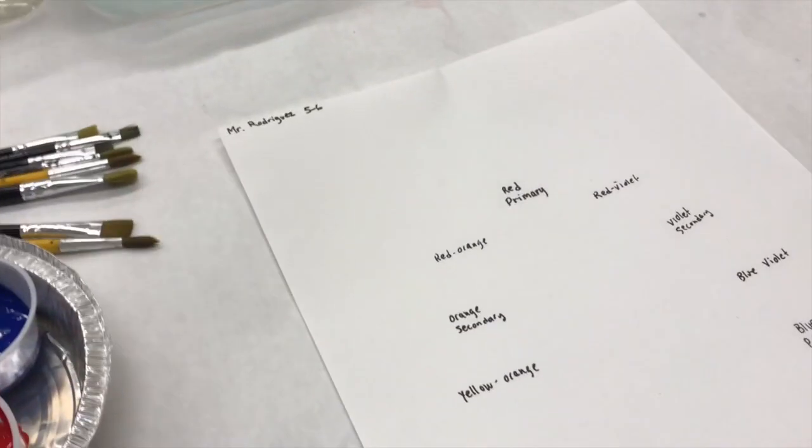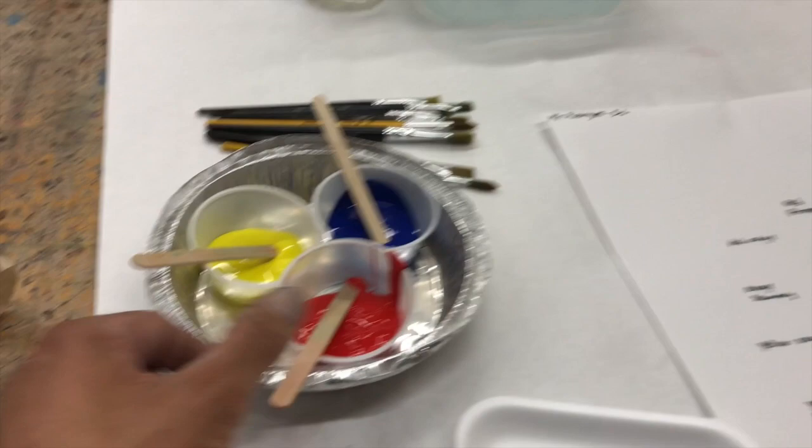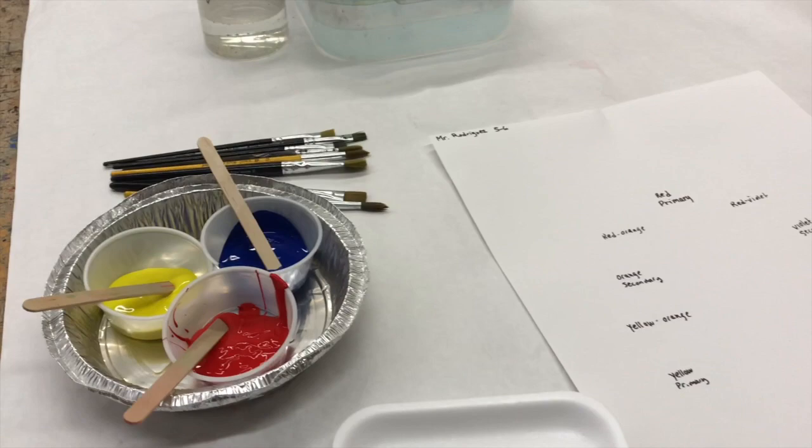Here's the basic setup for our painting. When you go up to get your primary colors you'll need a container to hold all three of your colors and you will need a popsicle stick for each color so that we do not put dirty brushes in here contaminating the paint.